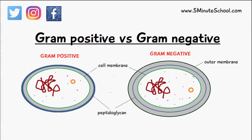In today's video I just want to very briefly talk about the main differences between gram positive and gram negative bacteria. These two diagrams here show you a very simplified version of gram positive and gram negative bacteria. If we look at the internal structures they're very similar — we have this DNA strand here in both of them, we have ribosomes dotted throughout the cytoplasm, and we have this circular DNA which is also known as a plasmid.